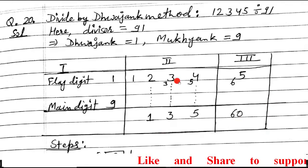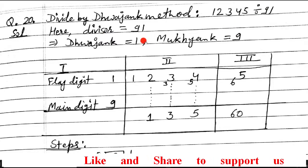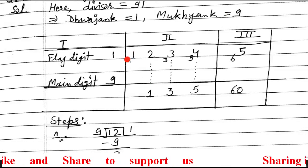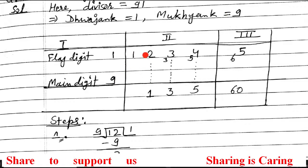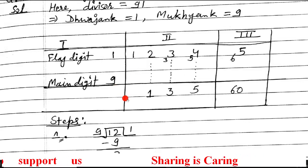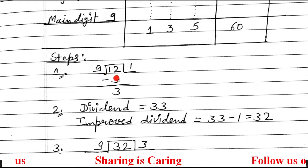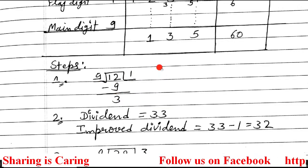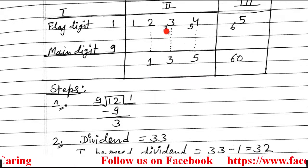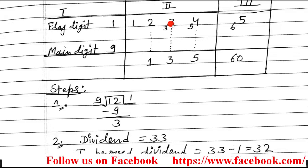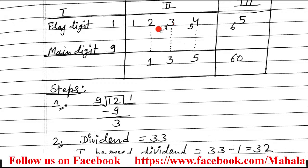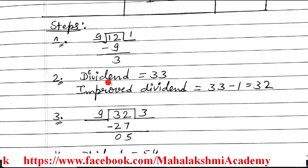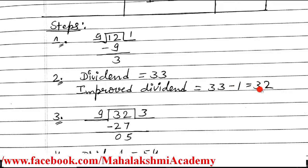Now the last question of Dwajang method. Dwajang is 1 and Mukhyang is 9. Start the division. Since 1 is less than 9, mix in the next digit to get 12. 12 divided by 9: quotient 1, remainder 3. Enter quotient 1 and remainder 3. The dividend is 33. Improved dividend: 33 minus 1×1 = 32. Since it is positive, move further.